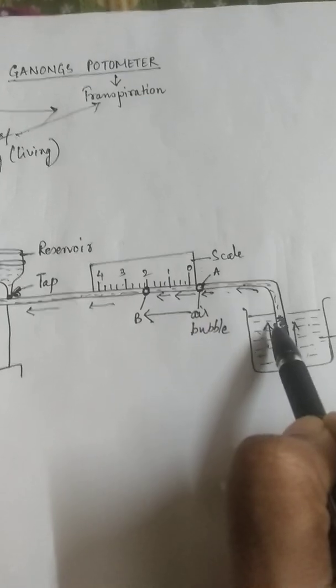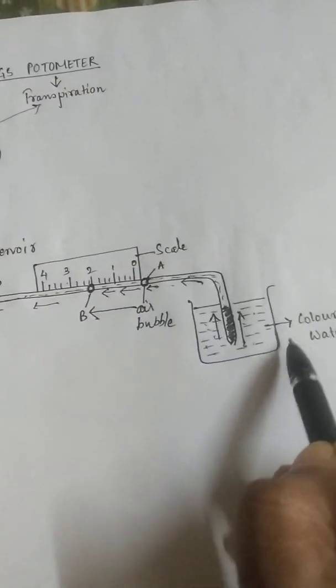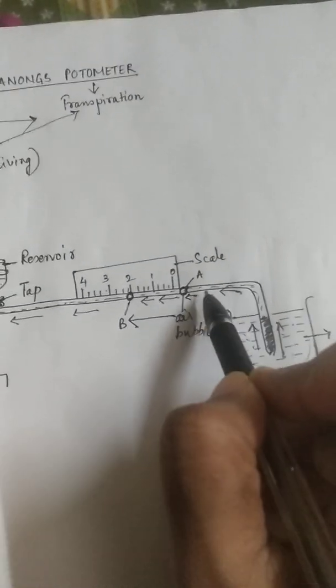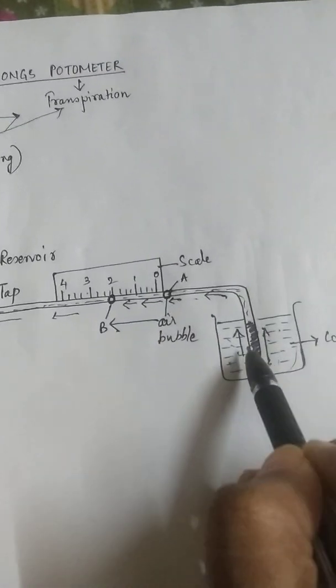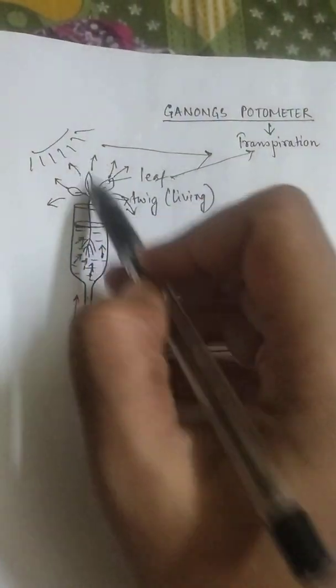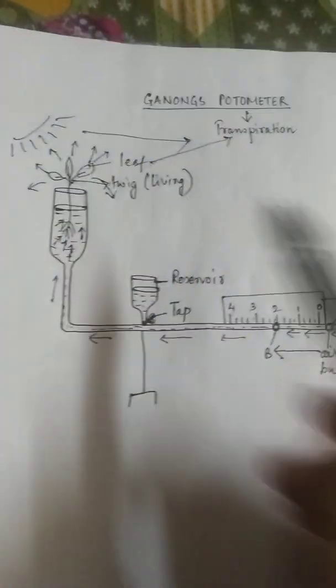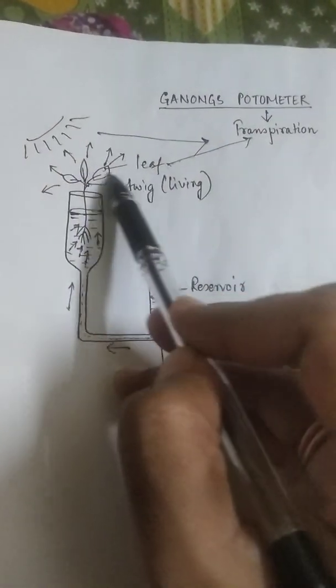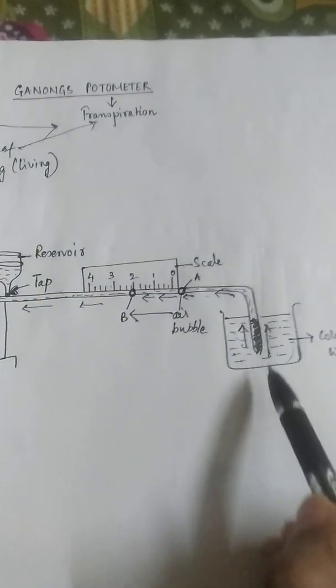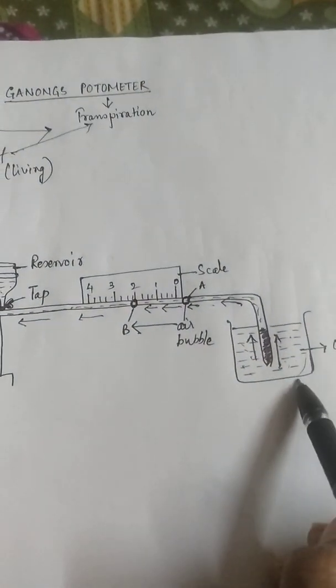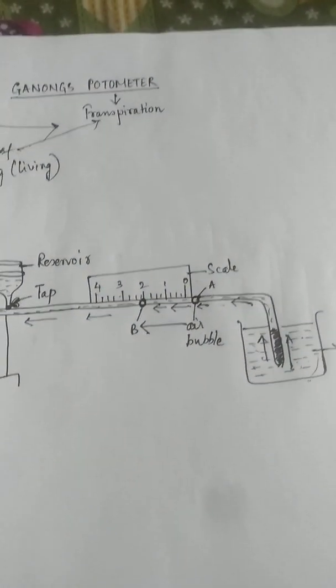Because the air bubble is being pushed by the water which is sucked from the this colored water beaker. And why is the water getting into the colored beaker? It is because the plant is transpiring.